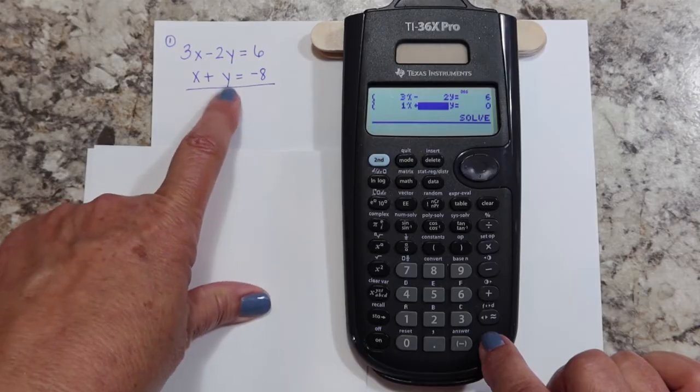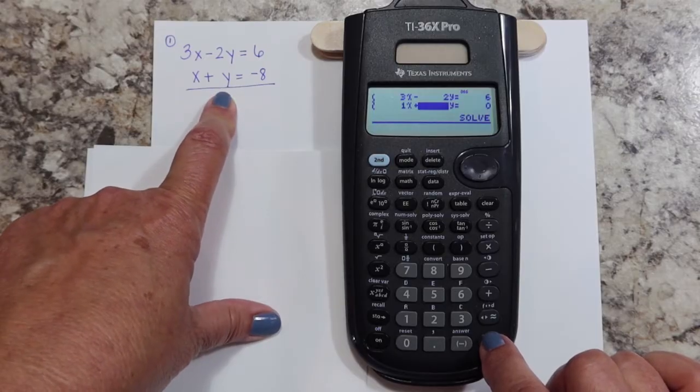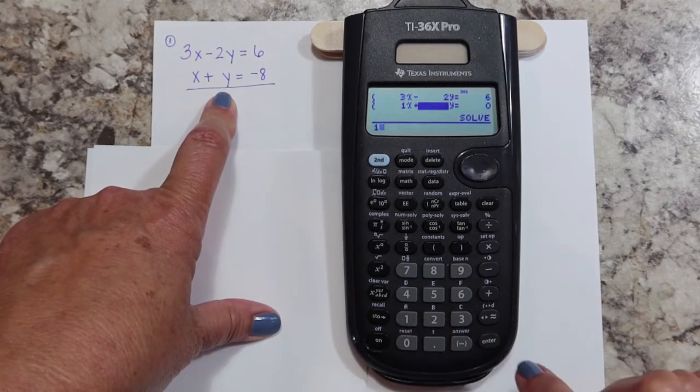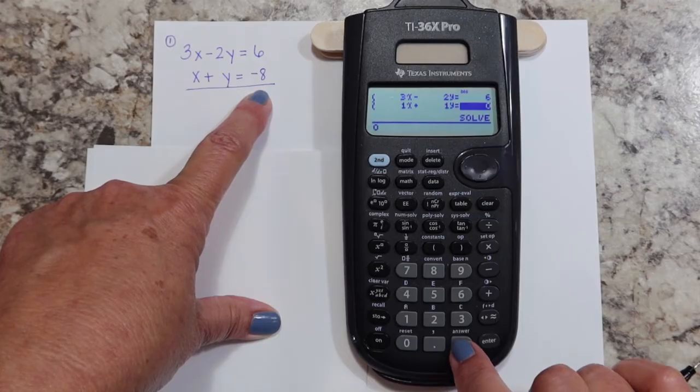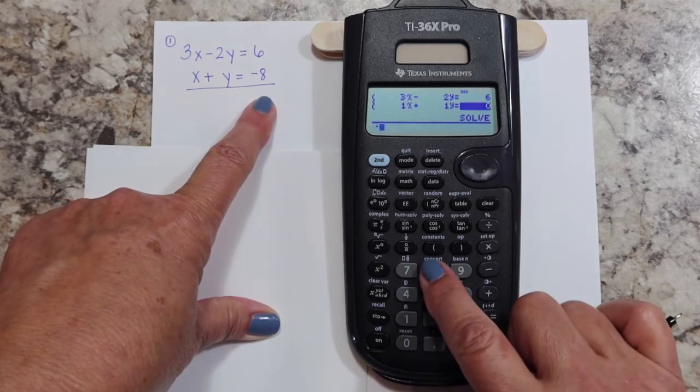Now I'm over to Y. This Y also is not showing the coefficient, so it's understood to be one, enter. Now here I have negative eight, so remember this button down here is your negative, and then you hit the eight.